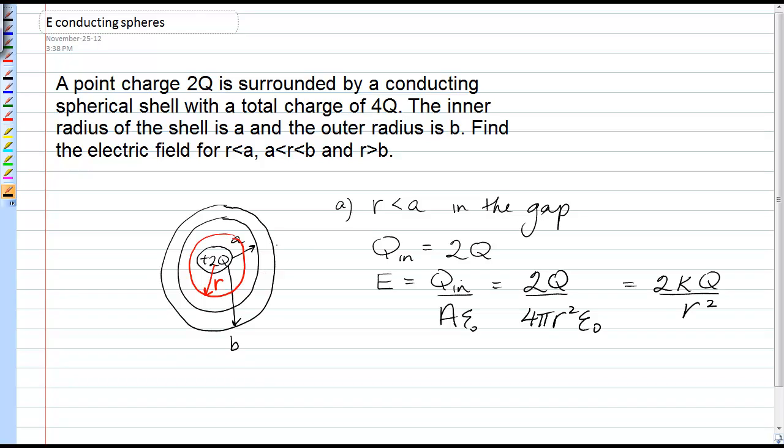Now, the total charge on the shell is 4Q. But what happens when you put this point charge in the center is that some of that charge is pulled to the inner surface. Ordinarily, if there were no point charge in the center, all the charge would reside on the outer surface only.